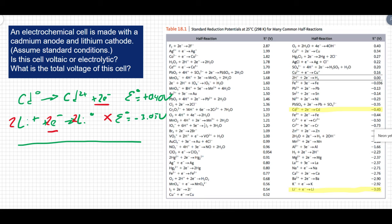So if we go and find the overall cell potential for this, we just have to do the plus 0.4 plus the negative 3.05 and you get negative 2.65 volts. We have a negative voltage confirming our initial suspicion that this is an electrolytic cell.